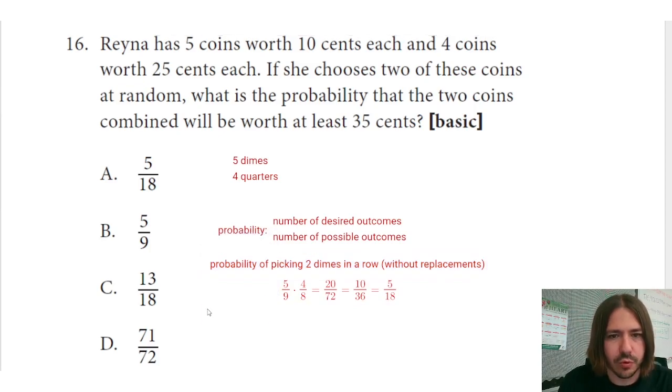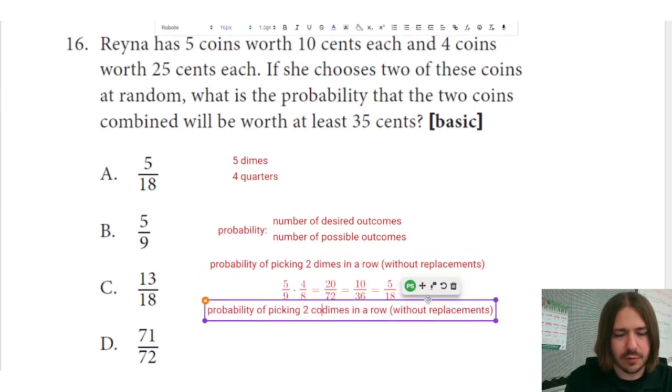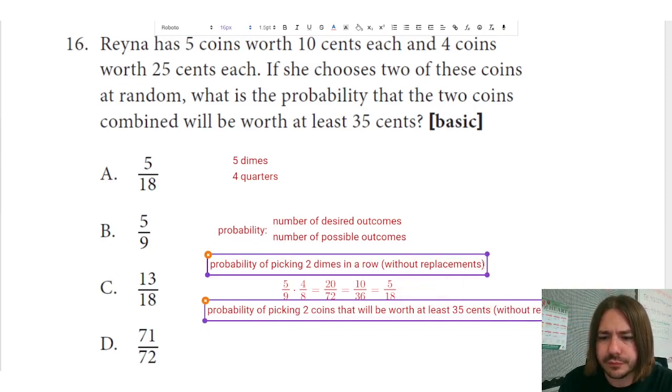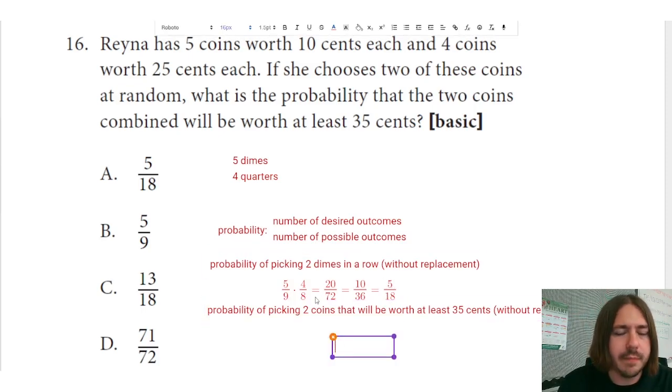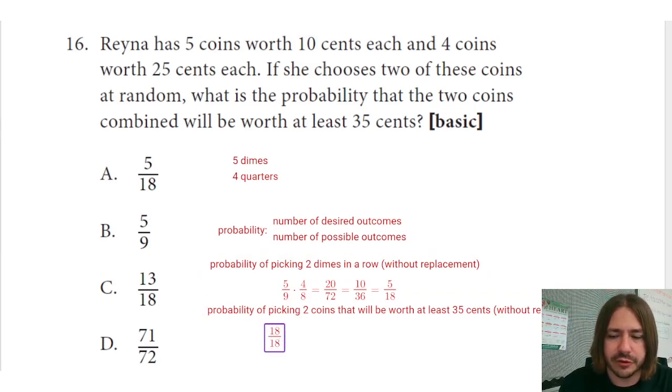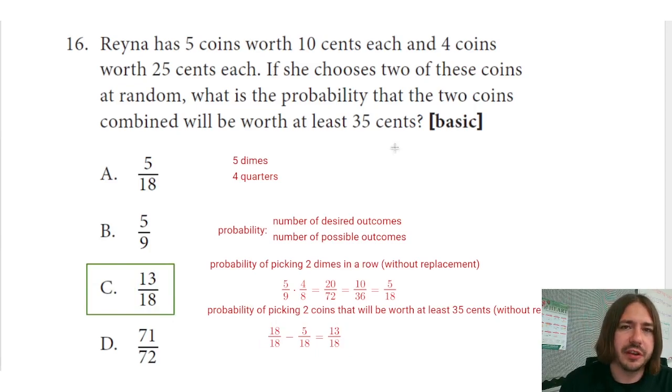So the probability of picking two coins that will be worth at least 35 cents, and again without replacement, is going to be one minus this. In other words, it's going to be, well, all 18 outcomes, so this would be 100 percent of all the total outcomes, minus those five outcomes that would be the two dimes in a row, and that's going to give us 13 possible outcomes. This is going to give us our answer here: 13 out of 18, which is going to be the probability of picking two coins that add up to at least 35 cents.